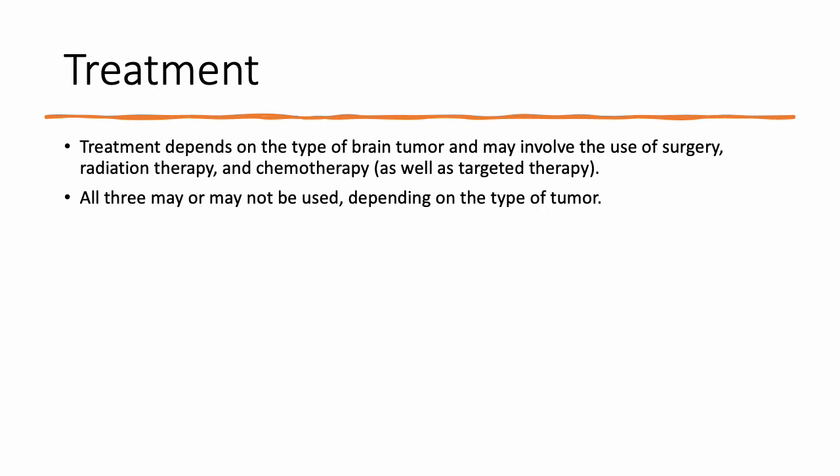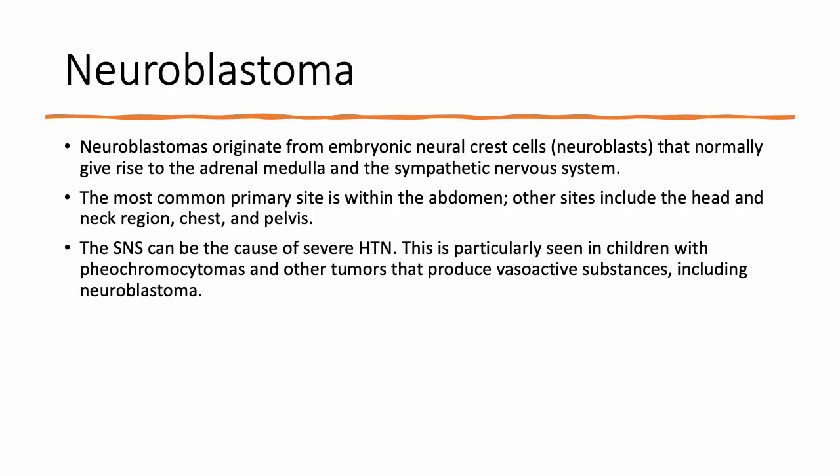The treatment of brain tumors is very dependent on the type of tumor, where it is, and whether or not we can get to it to take it out. If we can, neurosurgery will, and you may have a combination of surgery, radiation, and or chemotherapy. However, sometimes the tumor is in a place that we can't get to — in these situations, we may use the same approaches but the point is palliation and quality of life. Neuroblastoma is an interesting tumor because it arises from neural crest cells. These come from the adrenal medulla and are typically found within the abdomen, though less likely you can still find them in the head, neck, chest, and pelvis.